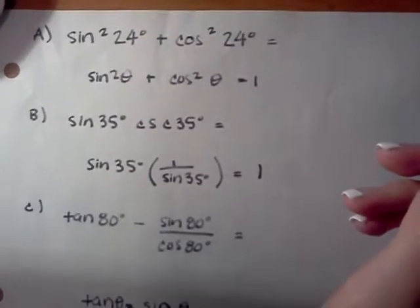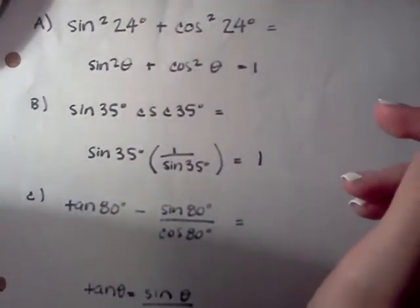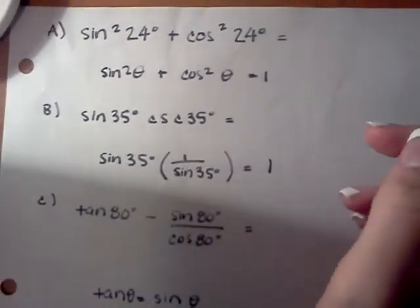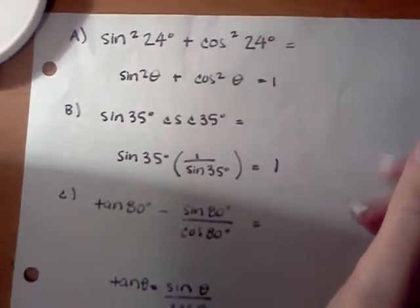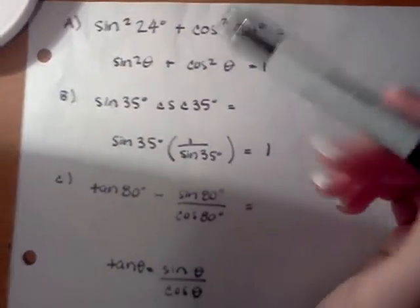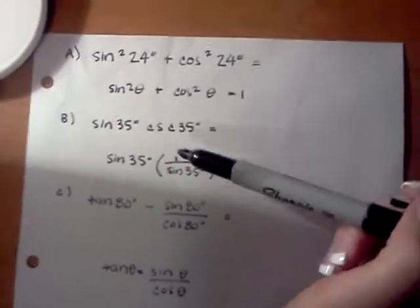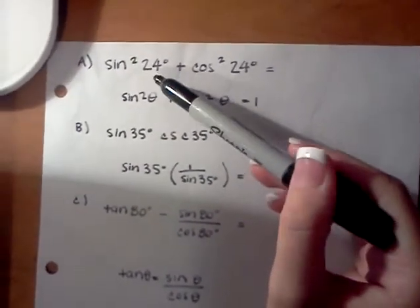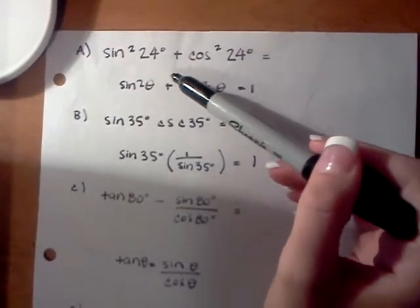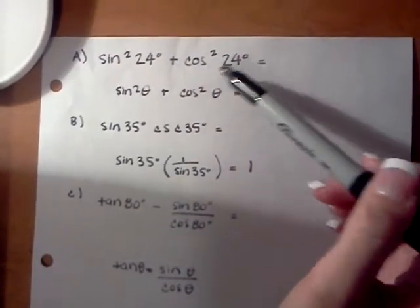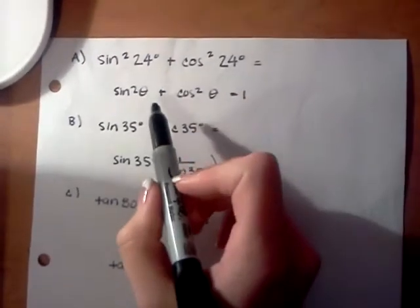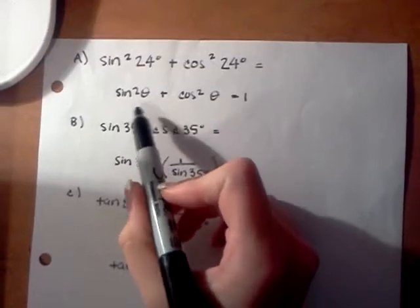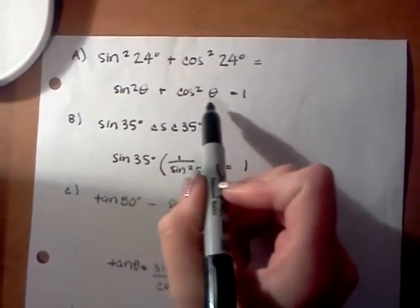Use identities and/or the complementary angle theorem to find the exact value of each expression. For the first one, sine squared 24 degrees plus cosine squared 24 degrees, we'll use the identity that sine squared theta plus cosine squared theta equals 1.